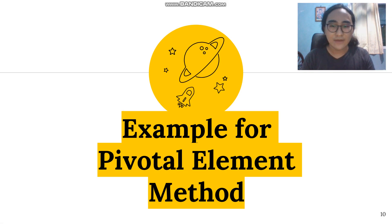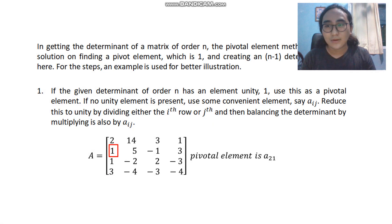Now we have an example. So you can notice here we have a 4 by 4 matrix and the first step is to choose our element unity 1. We have multiple 1's here. We have 1 here, we have 1 here, we have another 1 here, but for the sake of this example, we're going to use this one.